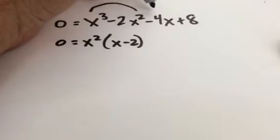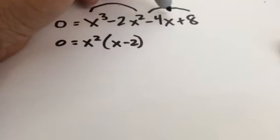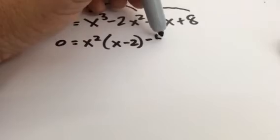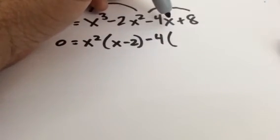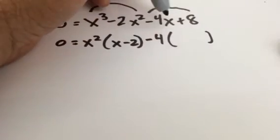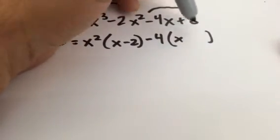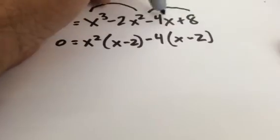And then these next two terms, there's a 4 in both of them. And I'm actually going to take out a negative 4 because that'll leave my first term in what's left positive. So if I take out a negative 4 from here, it's an x. If I take out a negative 4 from here, it's a negative 2.